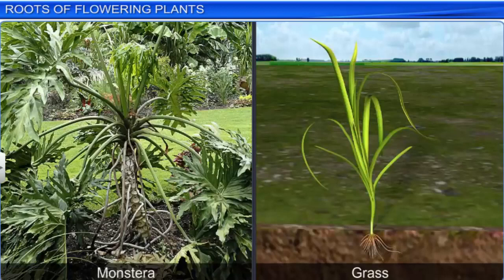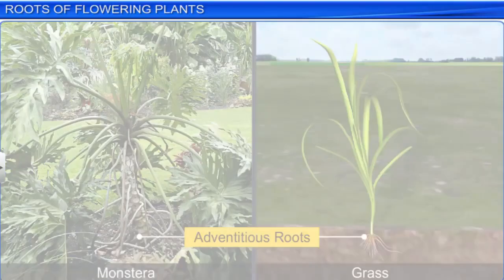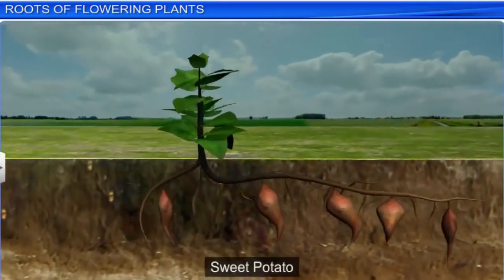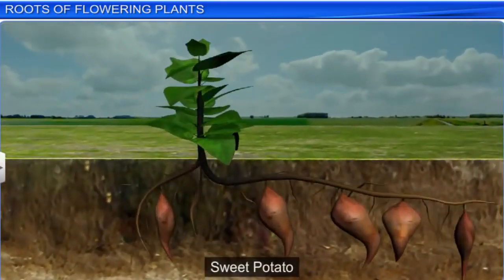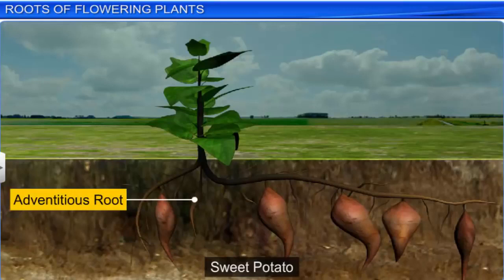There are some plants like monstera and grass which have roots that do not arise from the radicle. The roots emerge from various other parts of the plant like the stem or the leaf. These roots are known as adventitious roots. Some roots also modify themselves to perform specific functions; for example, the adventitious root in a sweet potato swells up and stores food for the plant.